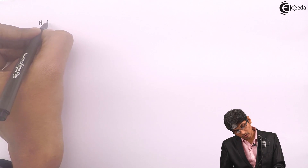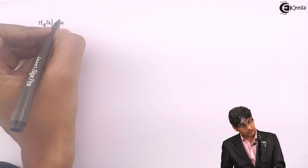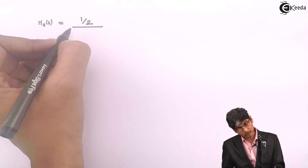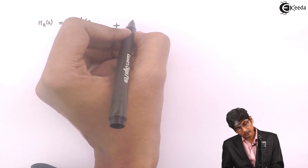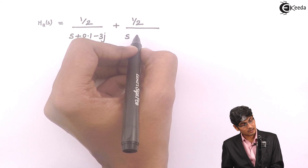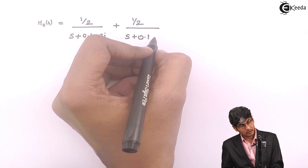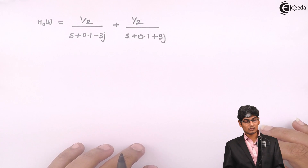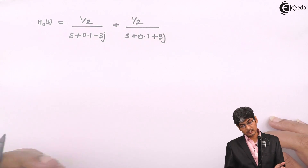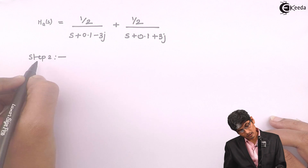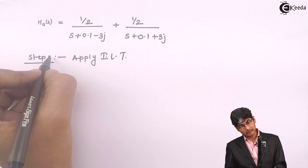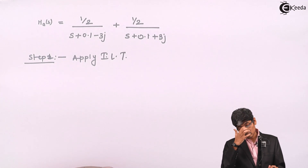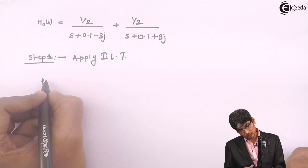So now I have received A and B. I will put them in to write HA of S in proper format. HA of S equals (1/2) divided by (S plus 0.1 minus 3J) plus (1/2) divided by (S plus 0.1 plus 3J). In step 1, I am going to apply the inverse Laplace transform to obtain H of T.